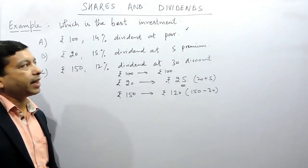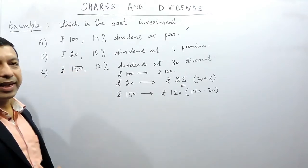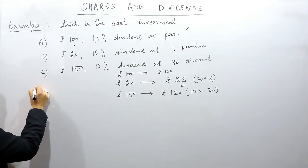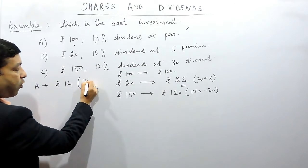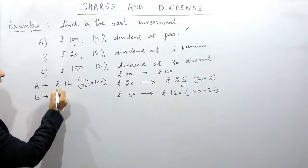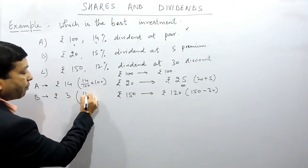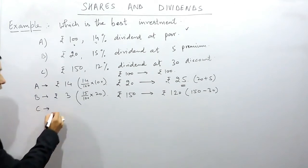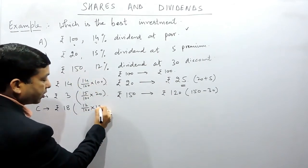When we talk about the best investment, we look for which investment gives the best dividend for an equal amount invested. The first shareholder gets rupees 14, which is 14% of 100, as dividend. In case of B, the dividend received is rupees 3, which is 15% of the company value of rupees 20. While in case of C, the total dividend is rupees 18, which is 12% of the company value of rupees 150.